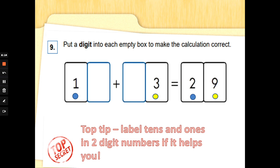Next one. Put a digit, that just means a number, into each empty box to make the calculation correct. Something add something equals twenty-nine. Top tip, label the tens and ones in two digit numbers if it helps you. So let's put our tens and our ones, and we can write that above them. We can also do this in the arithmetic paper. We've got one tens and some units, and some tens and three units, and we're trying to make twenty-nine. So we need two tens. We've only got one ten at the moment, so one add what will give me two tens? That's it. One add one is two. So now we've got to look at the units. We need nine units, we've only got three. So let's count on from three, and we should get the answer six. Six, seven, eight, nine. So now we've added the digits, the numbers in, to make this calculation correct. Sixteen add thirteen is twenty-nine. Well done.